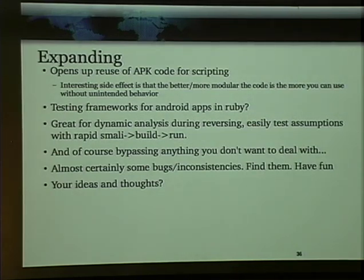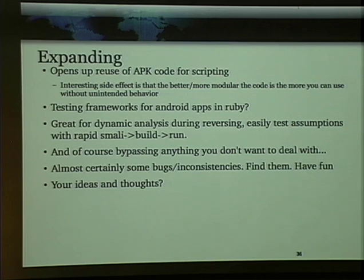This also allows you to build testing frameworks really quickly with the way you can prototype with Ruby. You already know what the function parameters are being passed into these functions, so you can very quickly write testing frameworks to build those parameters out and pass them in to see if anything interesting happens. Dynamic analysis and bypassing anything you don't want to deal with is always fun. There are probably some inconsistencies between the Dalvik virtual machine and the standard JVM, but regardless, you're probably going to have a lot of fun if you start looking at this.